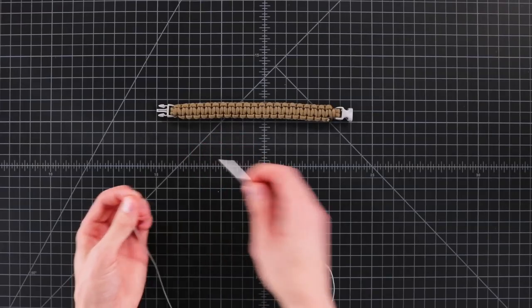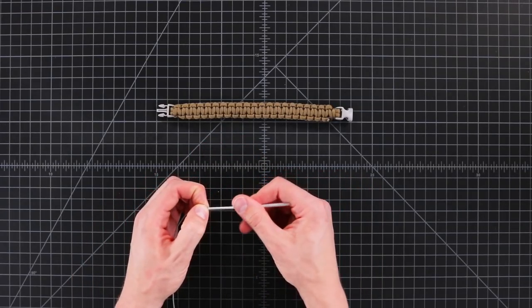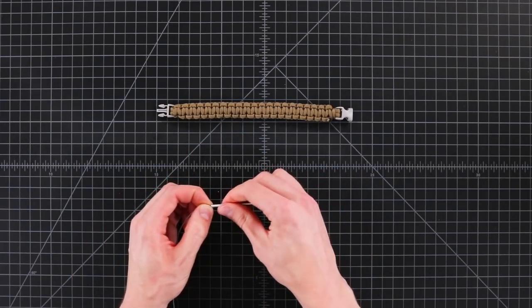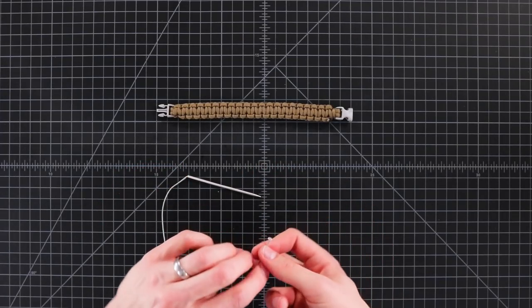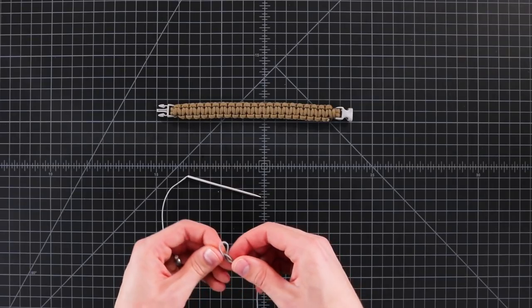Start by inserting one end of your micro cord into your fid. In the other end tie a knot, just a simple overhand knot near the end.